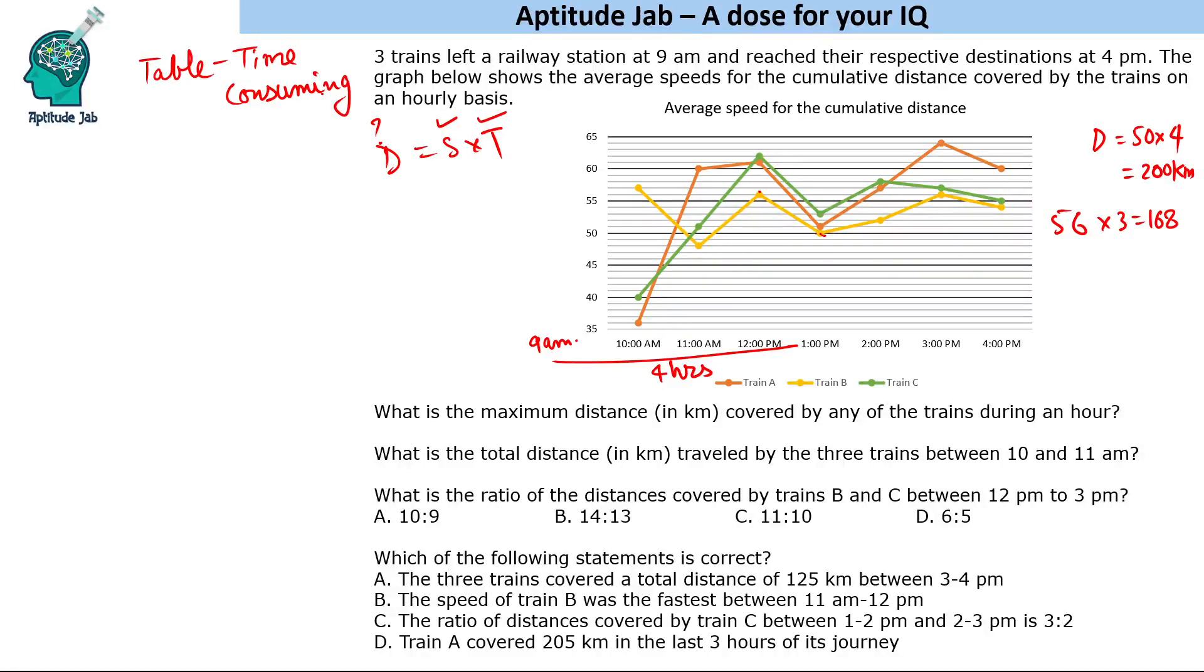Maximum distance traveled by any trains during an hour - the obvious thing you might think is that train A was traveling at 36, and there's a steep rise, the highest increase in speed. So you'd say it traveled 36 kilometers in one hour and then 60, so 60 into 2 is 120, making 84. You might mark the answer as 84, but that may be correct or may not be correct.